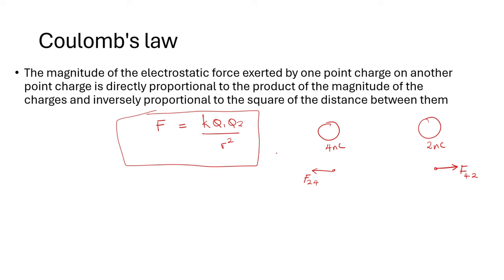You might ask: which force is this equation calculating — the force of 2 on 4, or the force of 4 on 2? These two forces are actually the same size; they have the same magnitude. The force between two point charges is equal, but in opposite directions. So F₂₄ and F₄₂ are the same force. In a question, if they ask you to calculate the force the 2 nanocoulomb charge exerts on the 4 nanocoulomb charge, you still use this same equation.